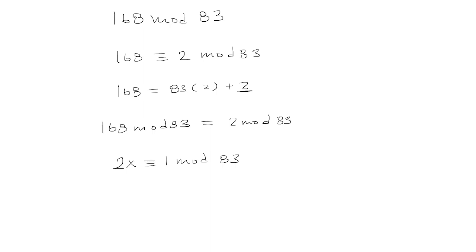Now let's look at what 2x could be. 2x could be 84 because 84 mod 83 is 1. It could be, let's see, 2 times 83, that'd be 166 plus 1, etc. But why don't we just use 84.